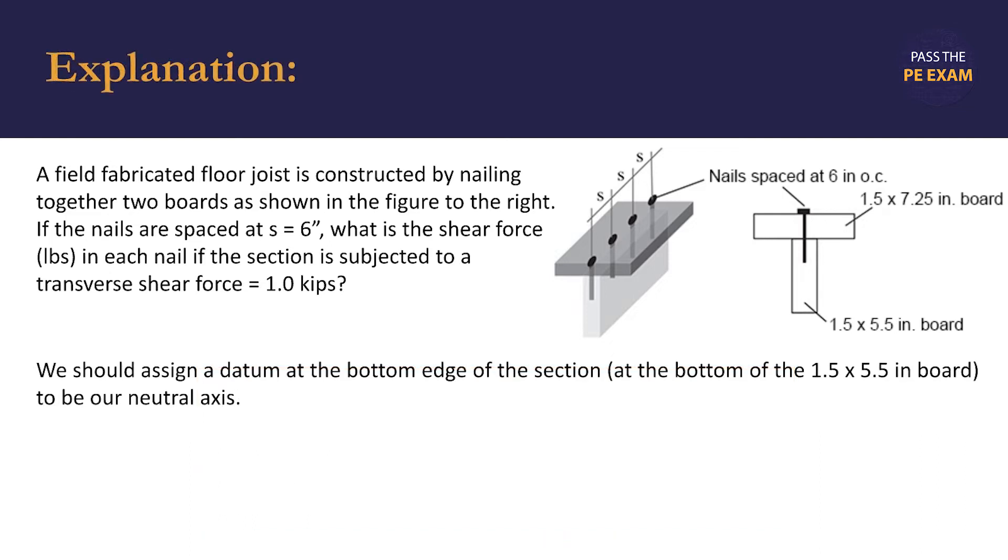Our first step to solving this problem should be to assign a datum at the bottom edge of the section, the joist, at the bottom edge of the 1.5 inch by 5.5 inch board to be our neutral axis. From there, we can calculate the y-coordinate of the centroid, y-bar. The PE handbook is very useful here.